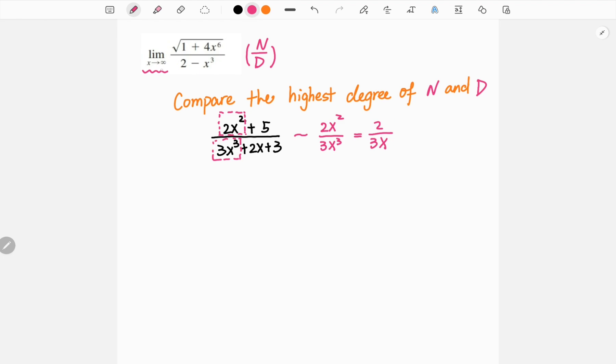The reason we only want to look at the highest degree term is, here's the trick: when x goes to infinity, the highest power term is going to grow the fastest. It's going to outgrow all the other terms, so that's why we can kind of ignore the terms with a lower degree since they are not as important as the highest term in determining the limit.